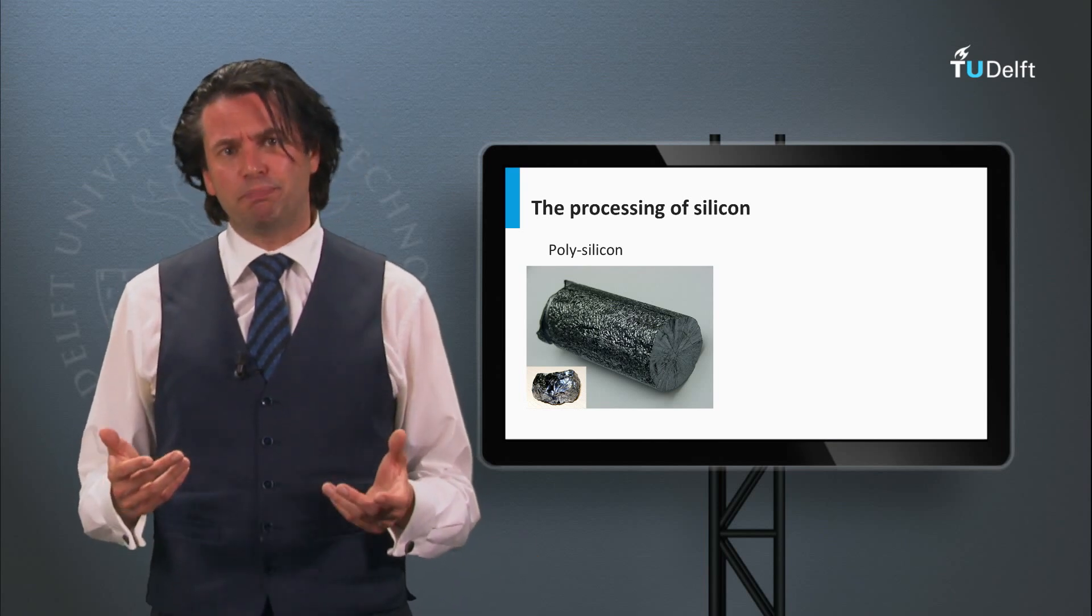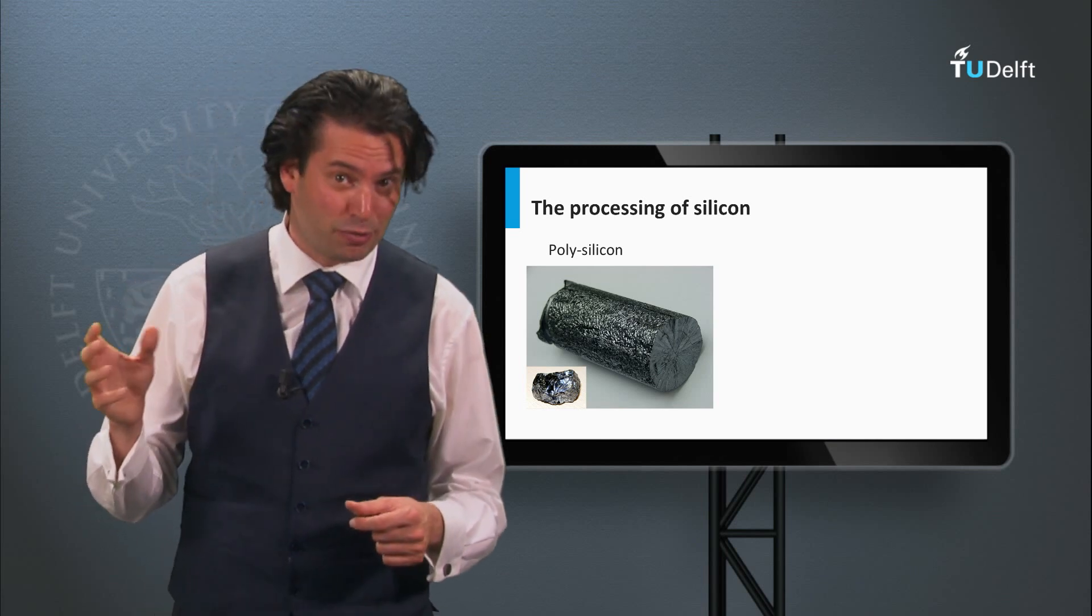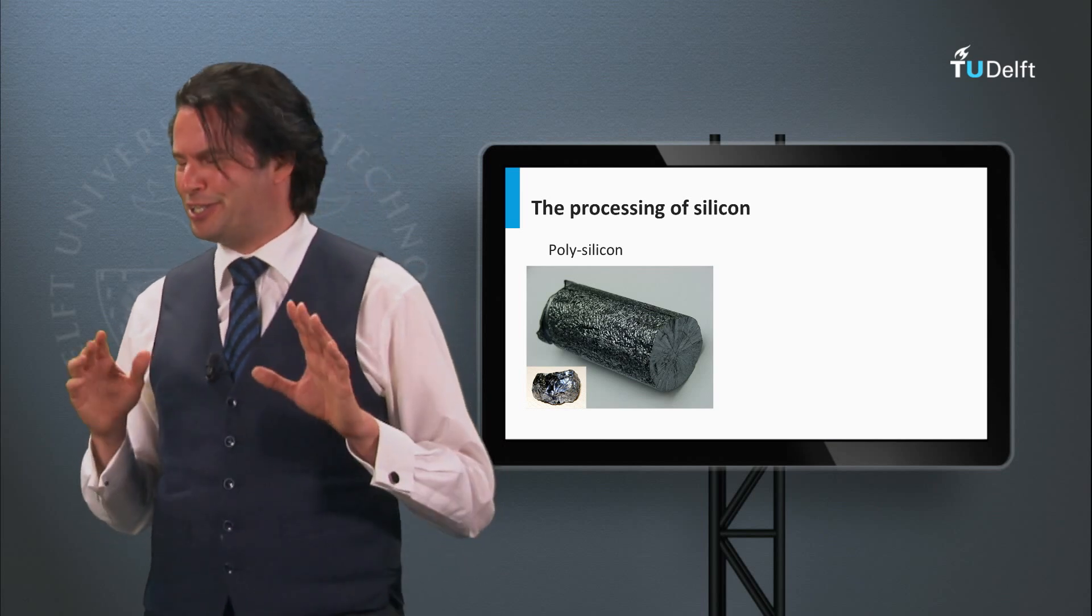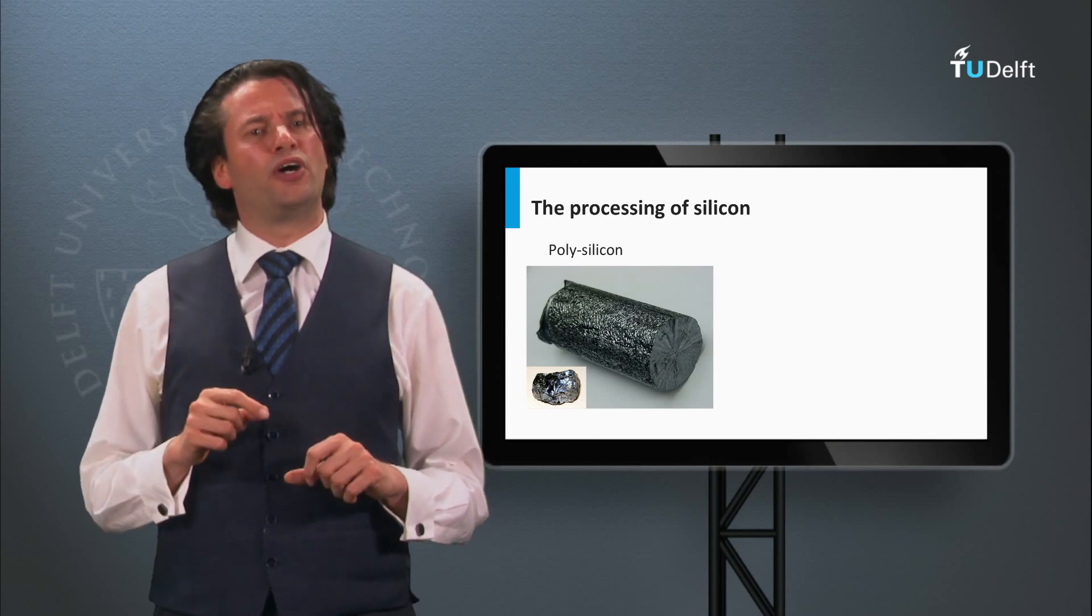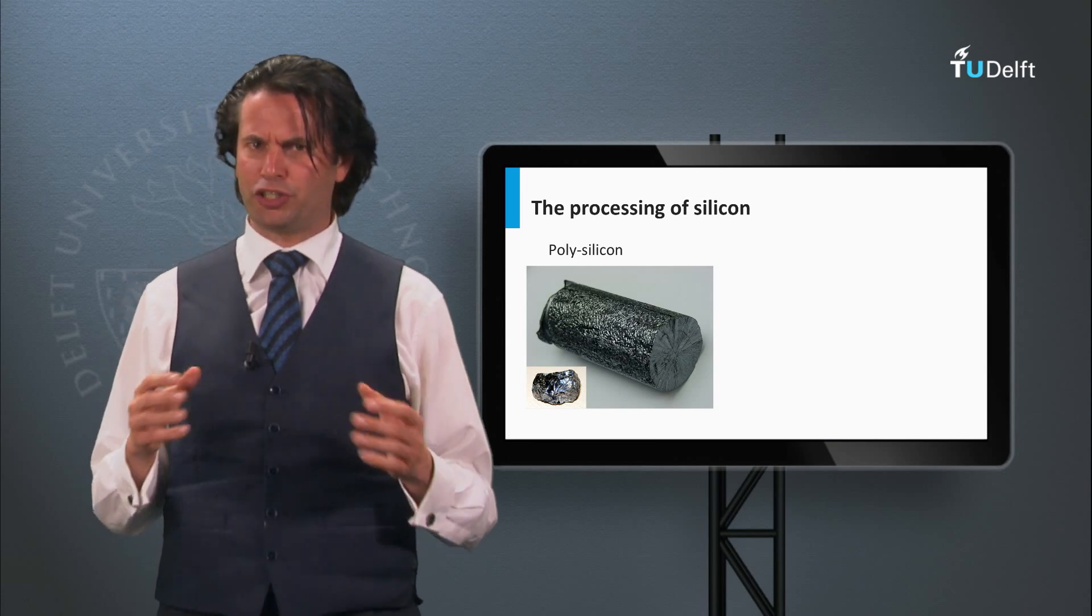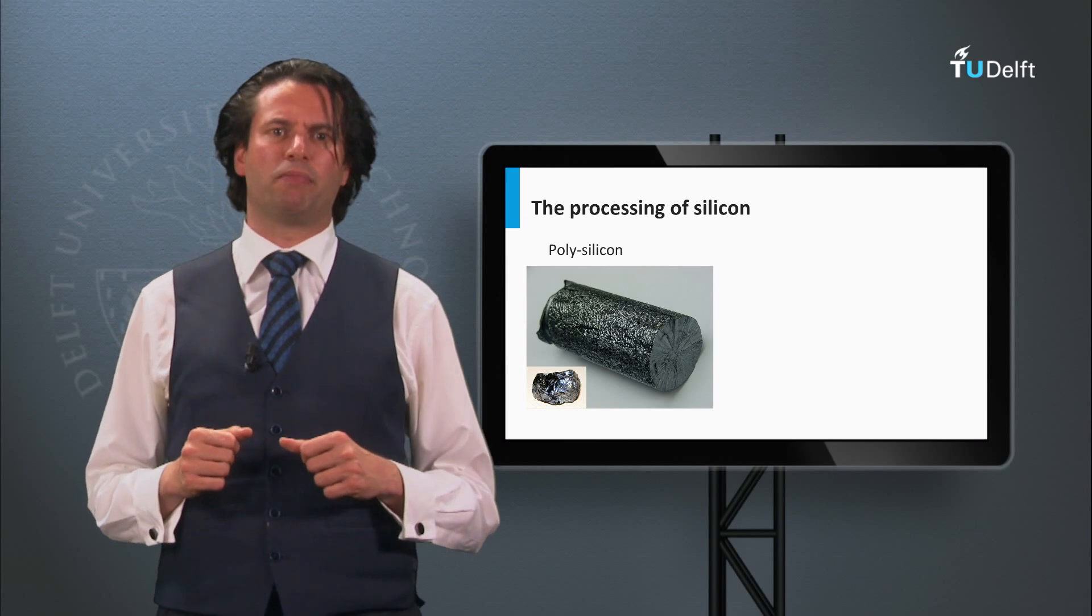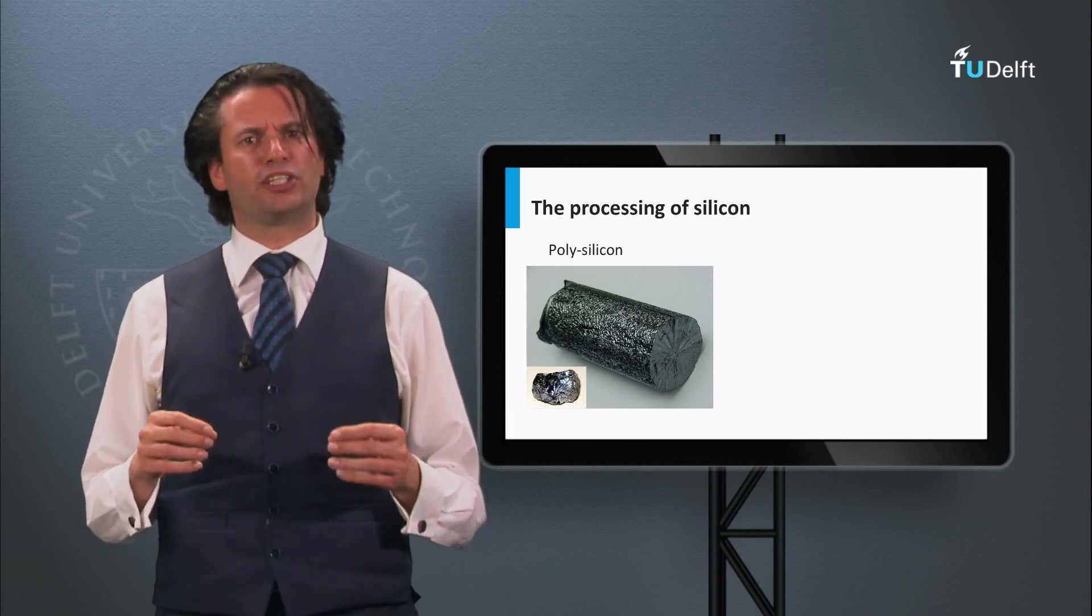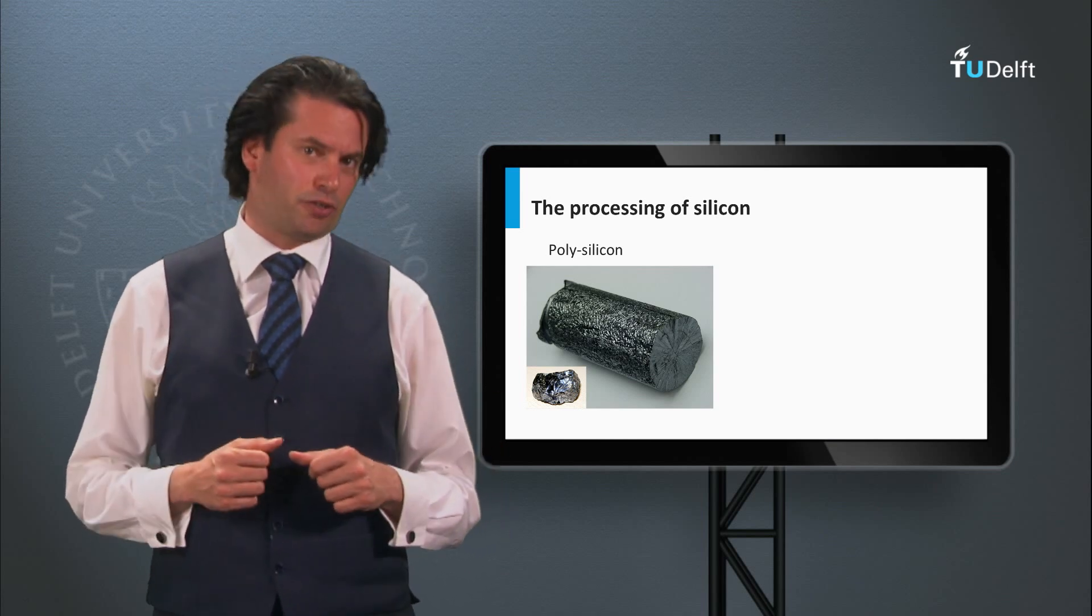Polycrystalline silicon can have a purity as high as 99.9999% or in other words, 1 out of 1 million atoms is not a silicon atom. Last, I would like to mention an alternative approach, that of upgraded metallurgical silicon. In this process metallurgical silicon is chemically refined by blowing gases through the silicon melt, removing the impurities. Although this processing is cheap, the purity of its silicon is not as high as the Siemens or the fluid bath reactor approach.